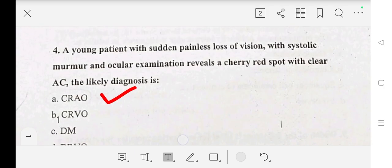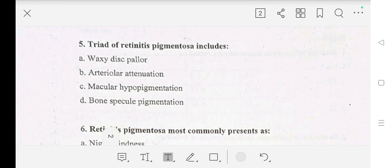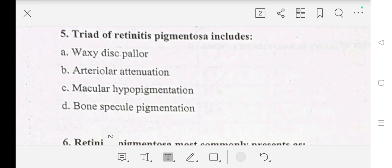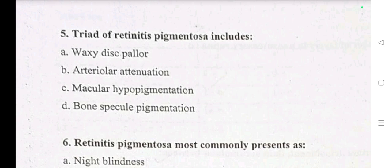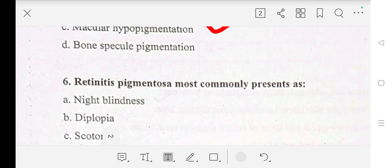Question number 5 options include A: TRAO, B: BSTRAO, and D: bone spicule pigmentation. Our answer is C: macular pigmentation.